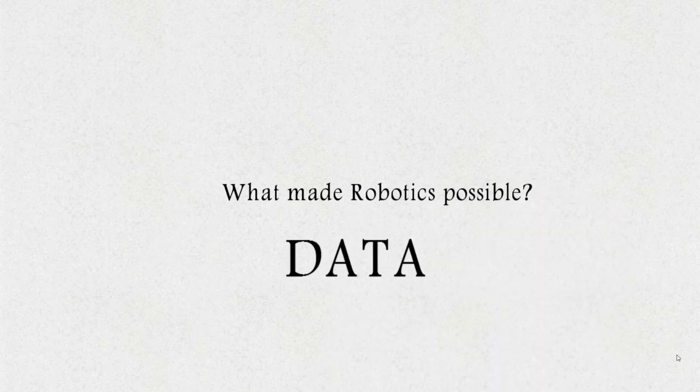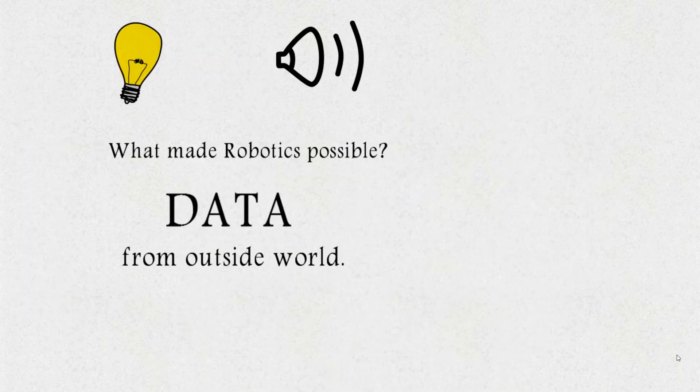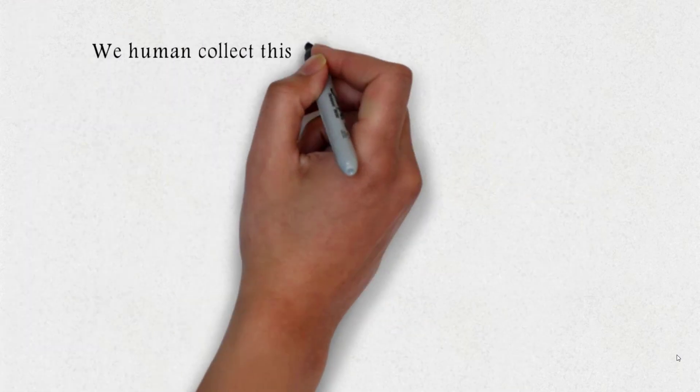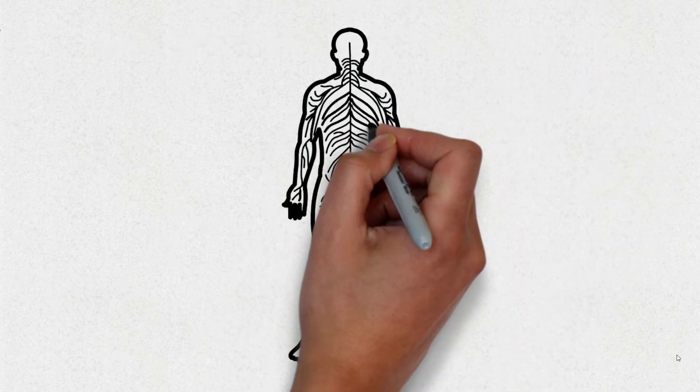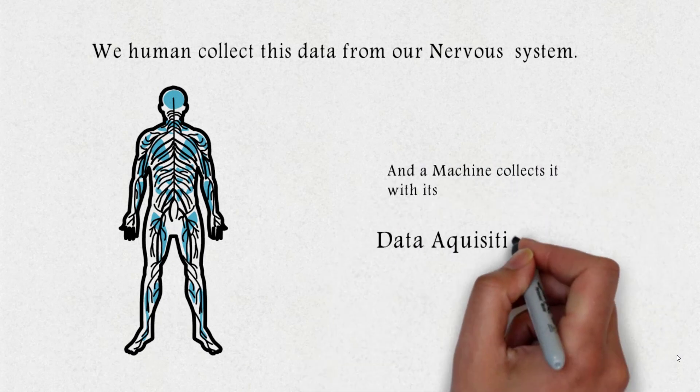Data. Data from the outside world in the form of temperature, light, and sound. We humans collect this data from our nervous system, but machines collect this data from their data acquisition system.